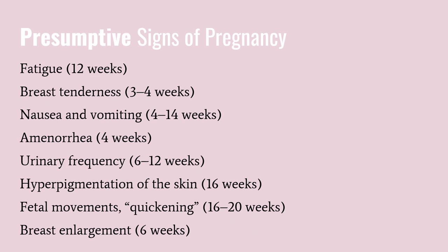Presumptive signs of pregnancy are those signs that the mother can perceive. The most obvious is the absence of menstruation. Skipping a period is not a reliable sign by itself, but if accompanied by consistent nausea, fatigue, breast tenderness, and urinary frequency, pregnancy may be likely. Presumptive changes are the least reliable indicators of pregnancy because any one of them can be caused by conditions other than pregnancy, such as amenorrhea, GI disorders, cancer, or oral contraceptives.